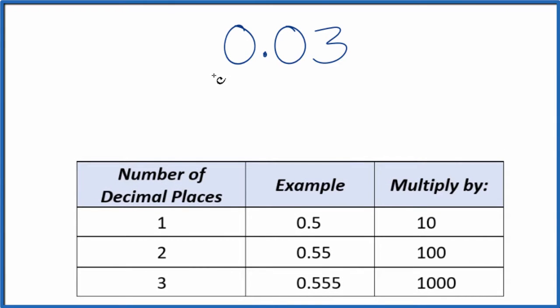Let's convert the decimal 0.03 to a fraction. So first off, we have 0.03. Let's call it 0.03 over 1, because that's still 0.03. We're just dividing by 1. We haven't changed the value.